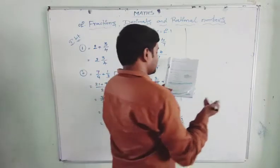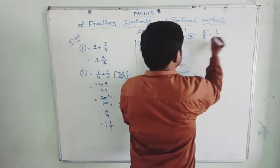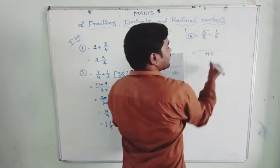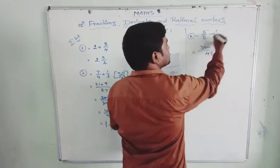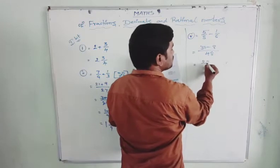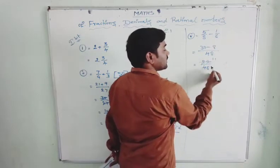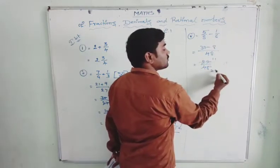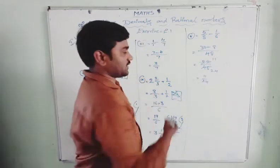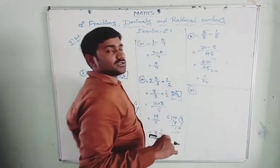Fifth one: 5 by 8 minus 1 by 6. Cross multiplication: 8 sixes are 48; 6 fives are 30 minus 8 ones are 8, giving 30 minus 8 is 22 by 48. Cancel by 2 to get 11 by 24. Since 11 by 24 is a proper fraction, it cannot be changed into a mixed fraction.